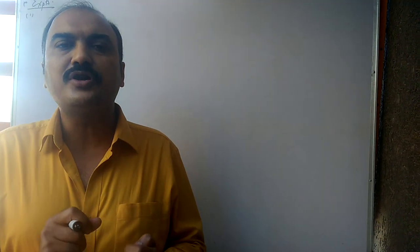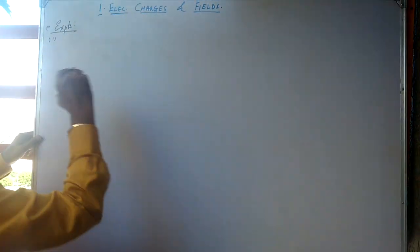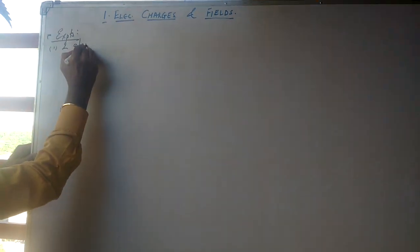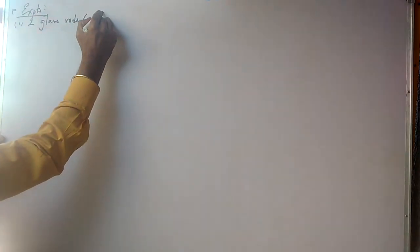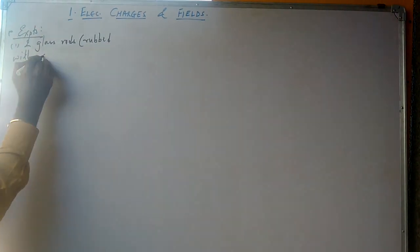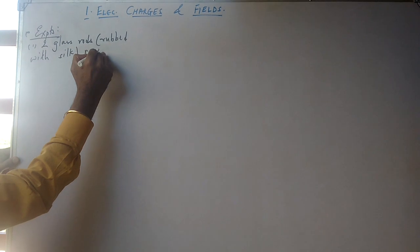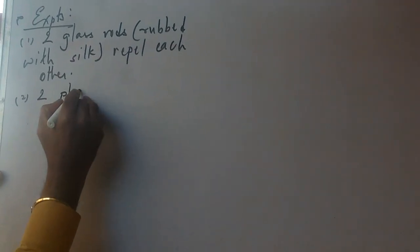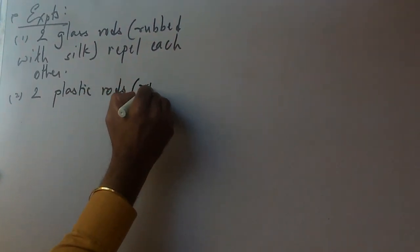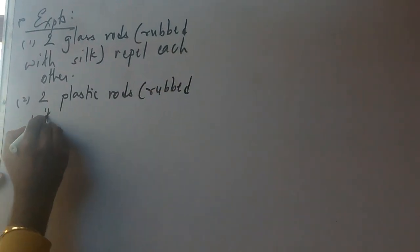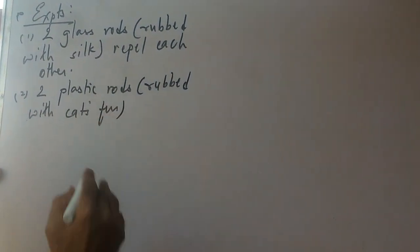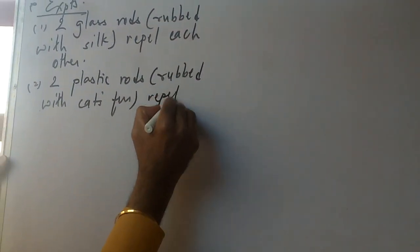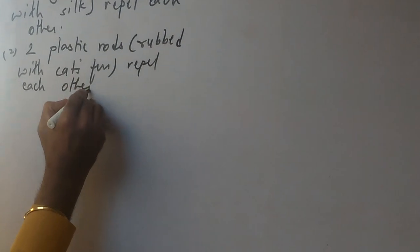Two such silk cloths would also repel each other, so a new force of repulsion was seen between these two charges. So two glass rods rubbed with silk repel each other. Similarly, a second experiment was with plastic rods and cat's fur. When two plastic rods which are rubbed with cat's fur, you can also call it a fur cloth, they too repel each other.